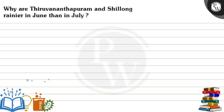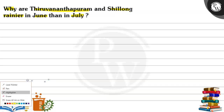Let's look at this question. The question says: why are Thiruvananthapuram and Shillong rainier in June than in July? So the question asks why these cities receive more rainfall in June as compared to July. First, let's identify the key concept here.